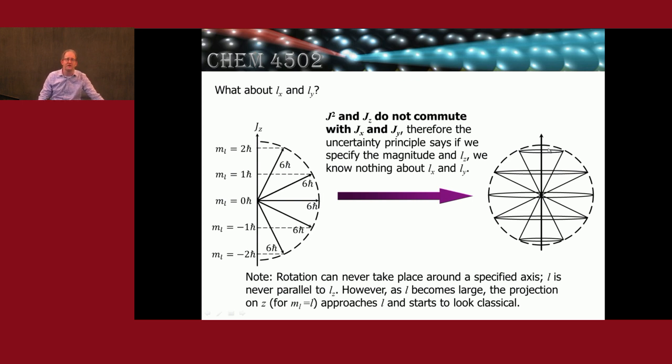We know how much total there is in Lx squared plus Ly squared. That's just L squared minus Lz squared. So we know that if there's total square root of 6 angular momentum in our rotating body and 2 of it is along the z-axis, then we have square root of 6 minus 2.